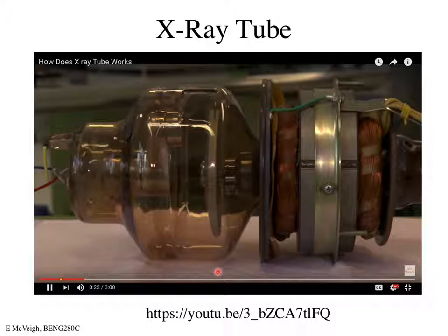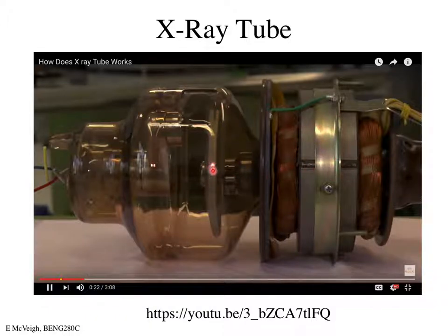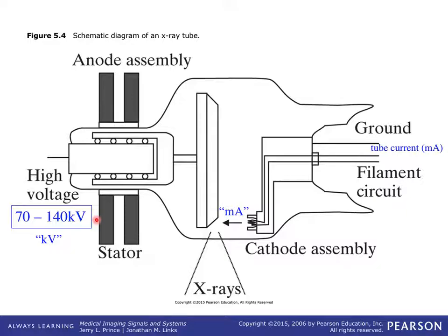Here's what the x-ray tube looks like. The anode and cathode are visible, with the electron beam going across, and a motor housing to spin the anode. The two controls on a fluoroscopy system are kV — the energy and wavelength of the beam — and mA — strictly the number of photons coming out.